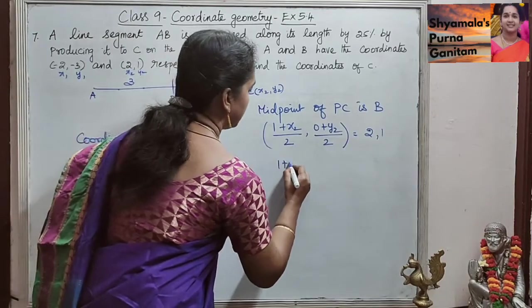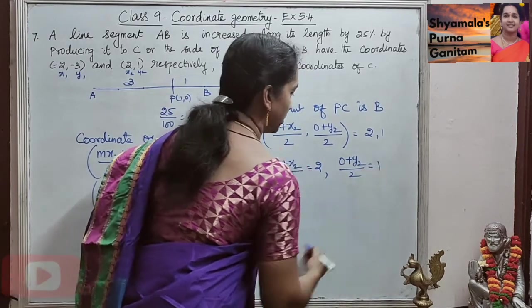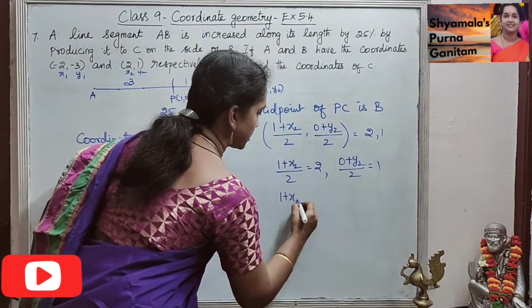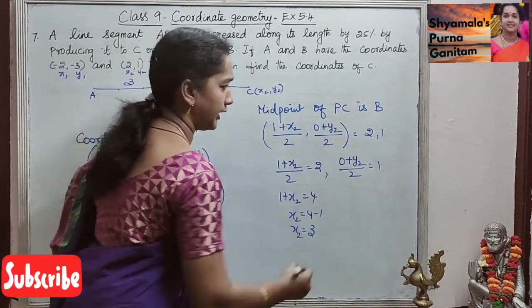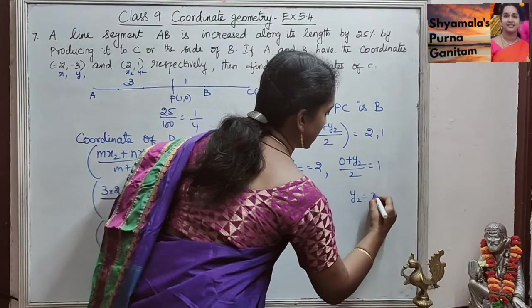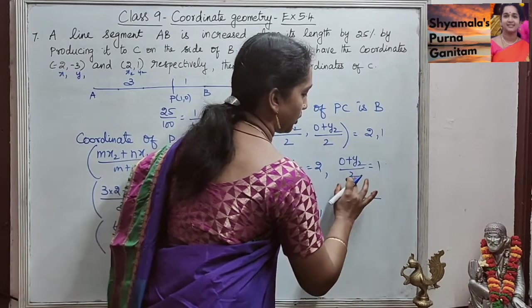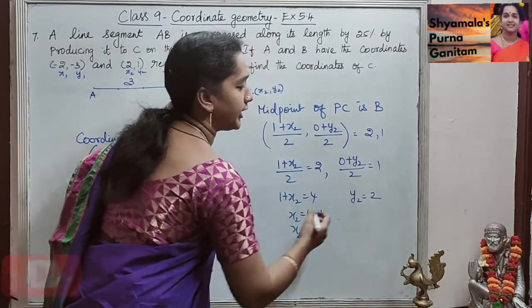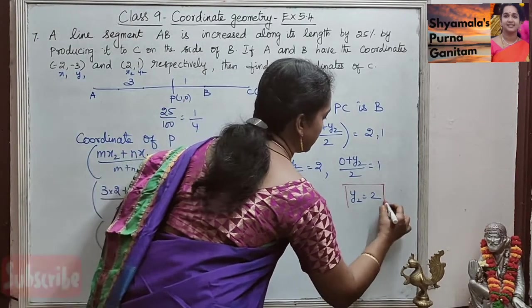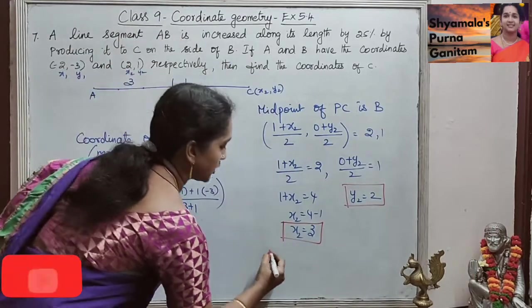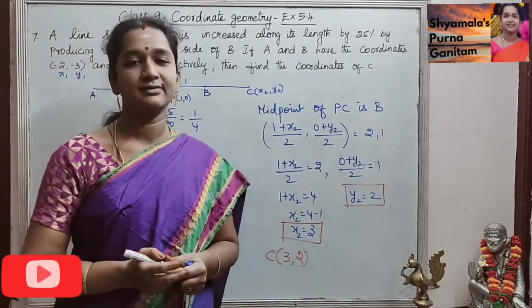So (1 + x₂) / 2 = 2, which gives 1 + x₂ = 4, so x₂ = 3. And (0 + y₂) / 2 = 1, which gives y₂ = 2. So we are asked to find the coordinate points of C, and the coordinates of C are (3, 2). This is the answer. Thank you.